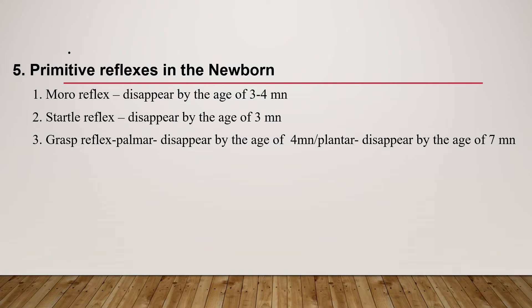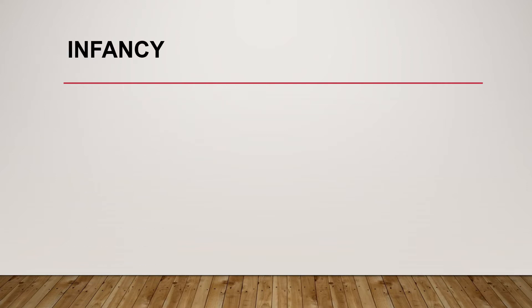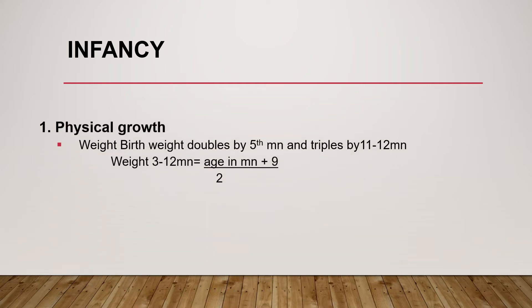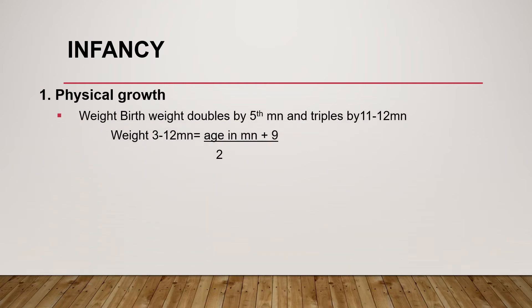Growth and development from two to 12 months: birth weight doubles by five months and triples by 11 to 12 months. To estimate average weight from three to 12 months, add nine to the age in months and divide by two. Length increases by 25 centimeters during the first year, reaching approximately 75 centimeters at 12 months.